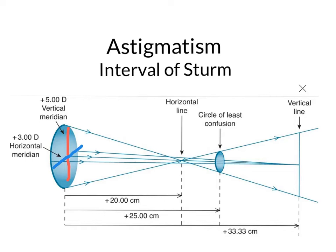In astigmatism, the 'A' in astigmatism means 'without,' and 'stigmatism' means 'with point.' So astigmatism means 'without a point.'